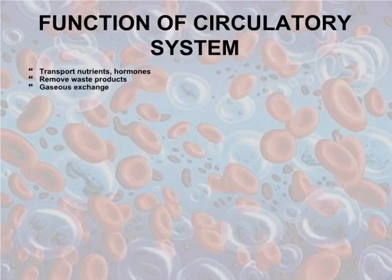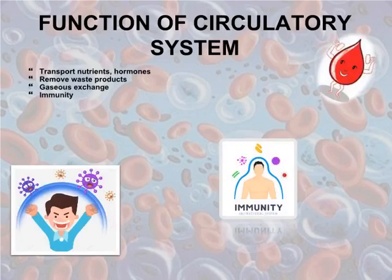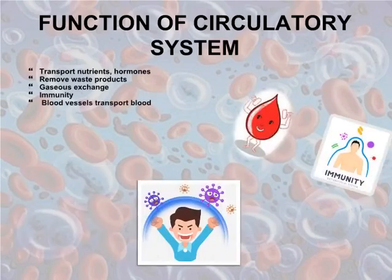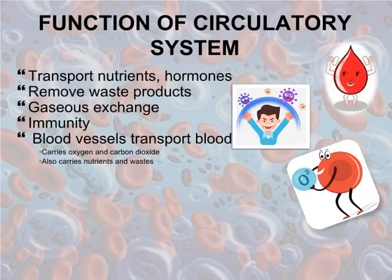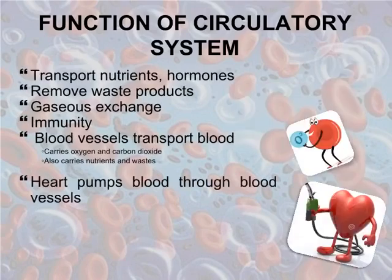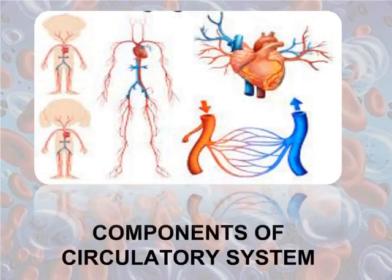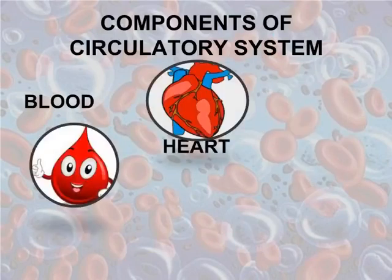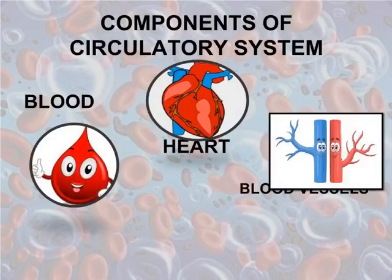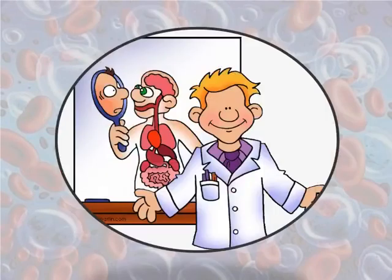Other functions include building immunity, and blood vessels transport blood, carrying oxygen and carbon dioxide, as well as nutrients and wastes. The heart pumps blood through blood vessels. The components of the circulatory system are: first, blood; second, heart; and third, blood vessels. Let's explore each component in detail.